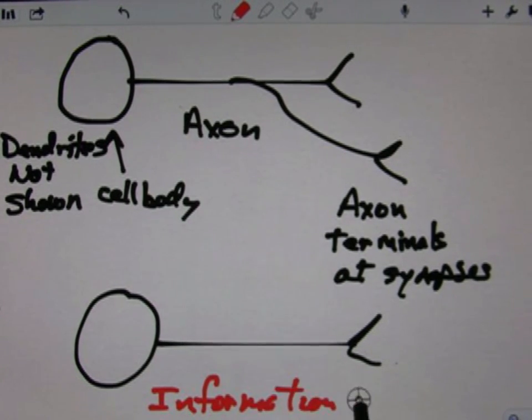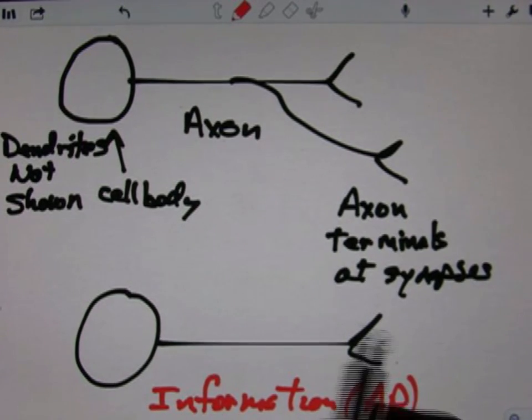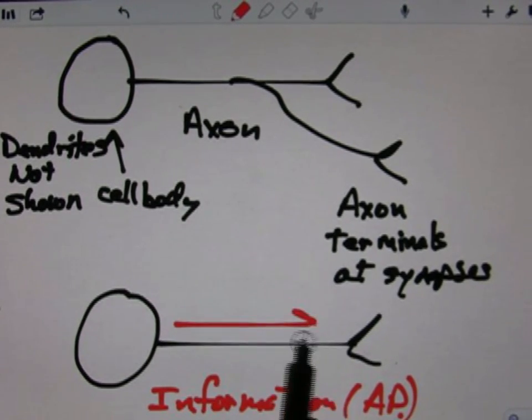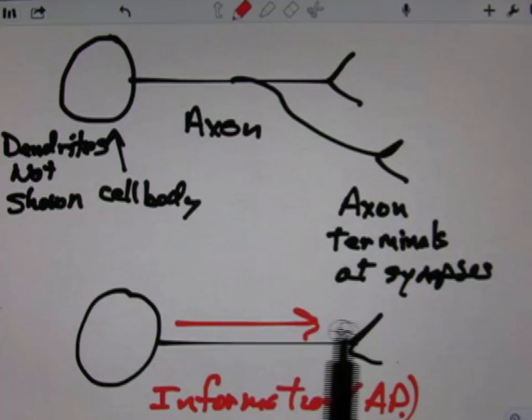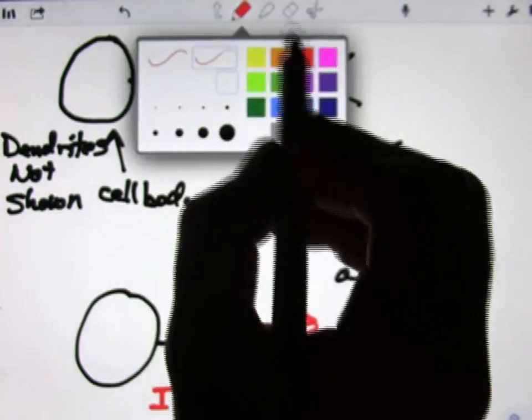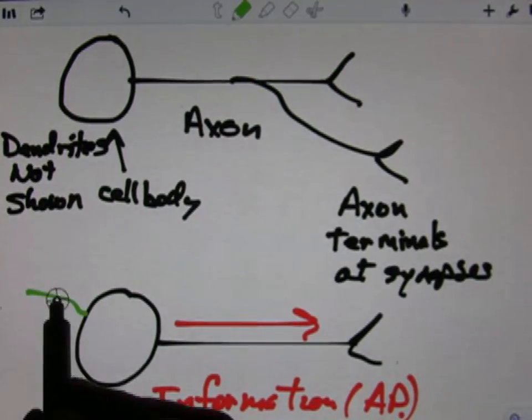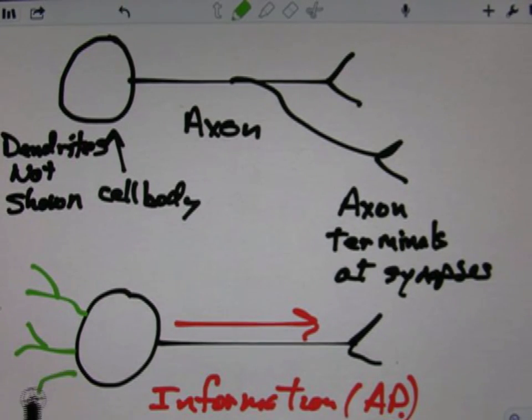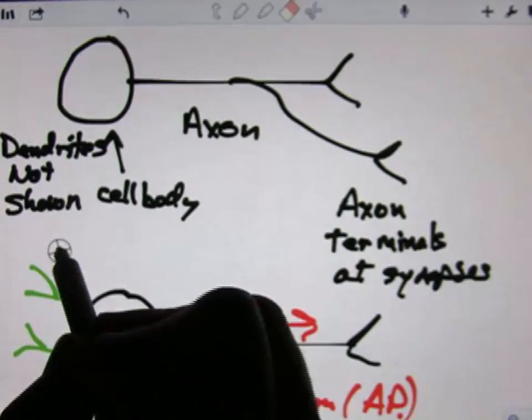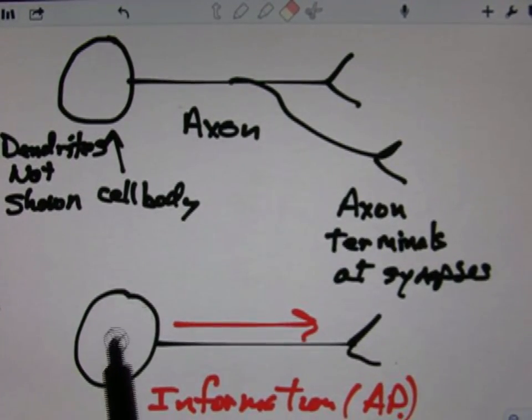In other words, the action potential is going from the cell out to these tips. We don't bother to draw dendrites unless we have to. Usually when neuroscientists are drawing neural circuits, they usually don't bother with the dendrites because, keep in mind...